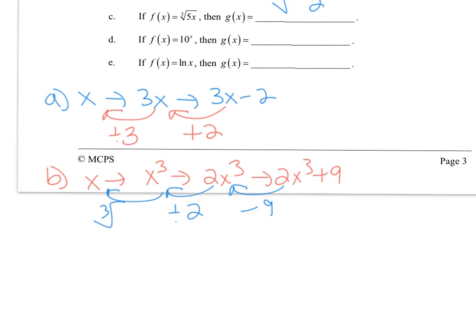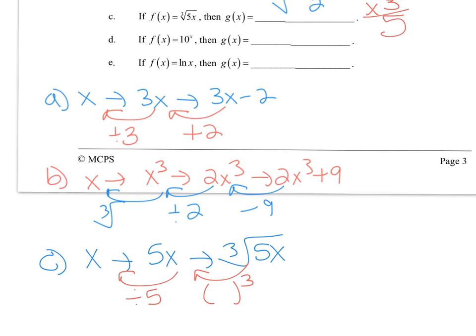For part c, we started with x, multiplied it by 5, and then took the cube root. Going backwards, we take it to the power of 3 and then divide by 5, so the inverse is x to the power of 3, divided by 5.